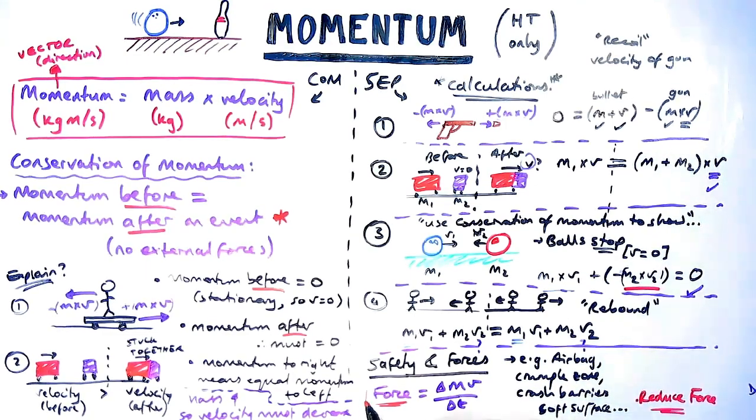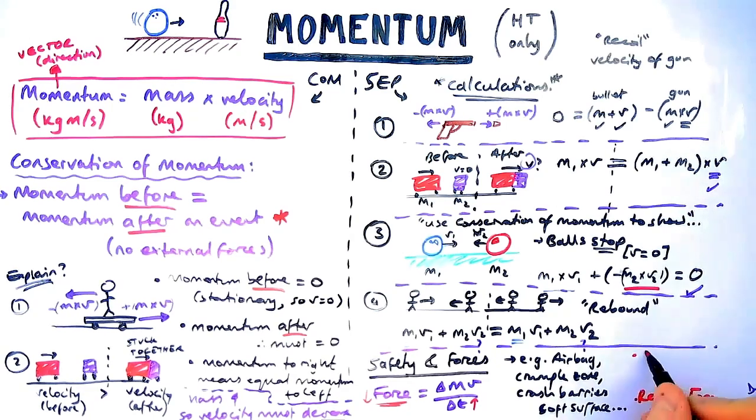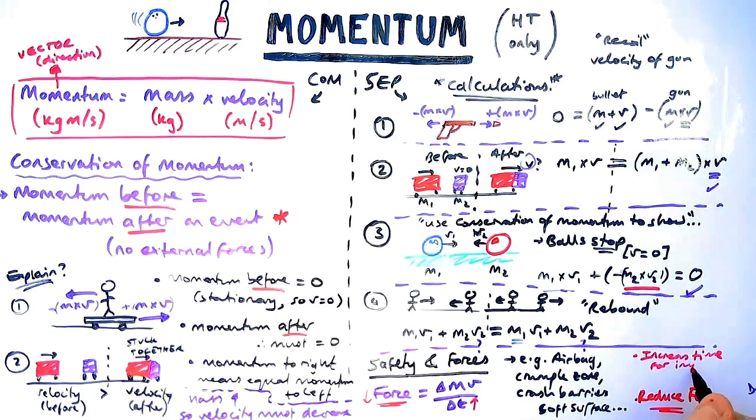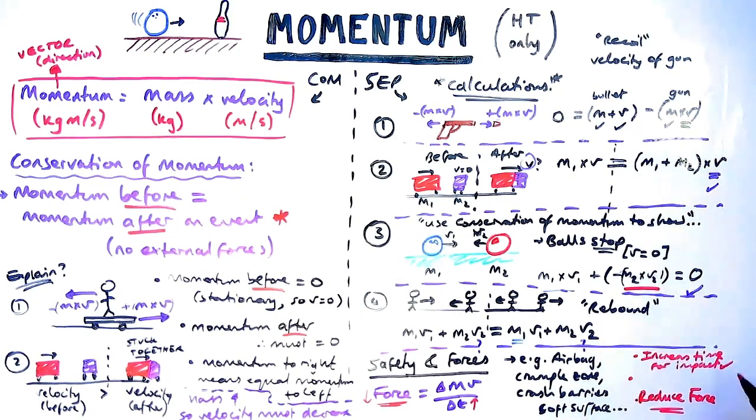To reduce the chance of injury you always want to talk about reducing the force. So how do we reduce the force? Using this equation we can increase the time taken, because they're inversely proportional. You increase the time taken for the impact to occur then you reduce the force.